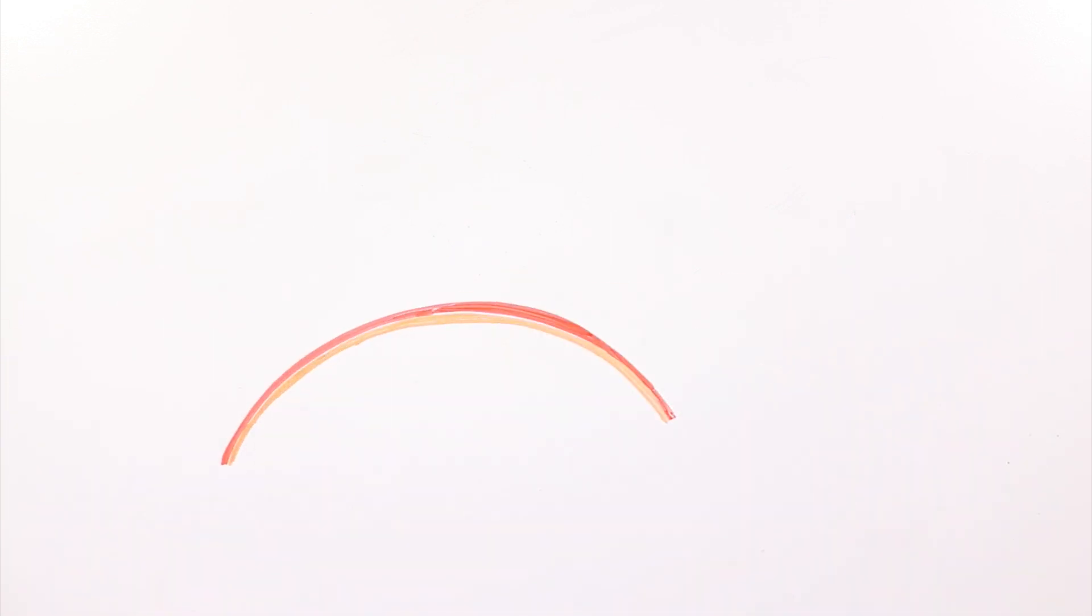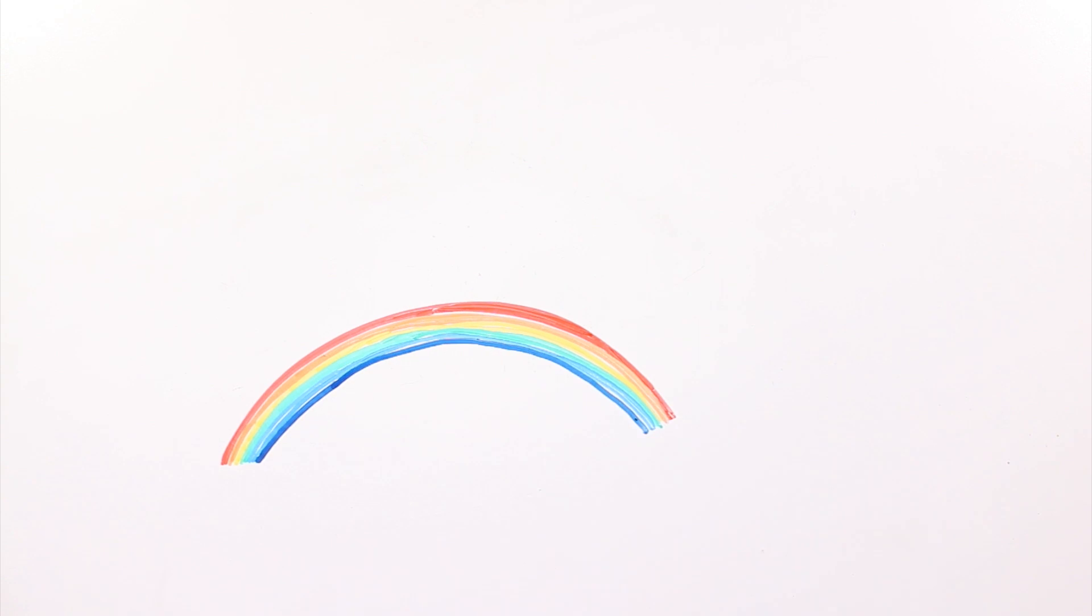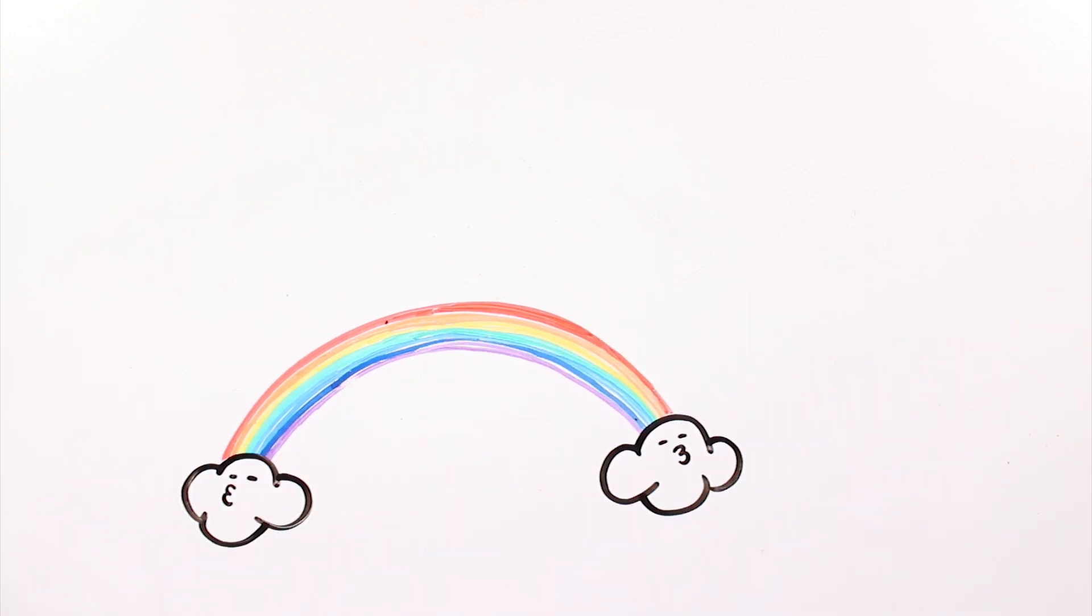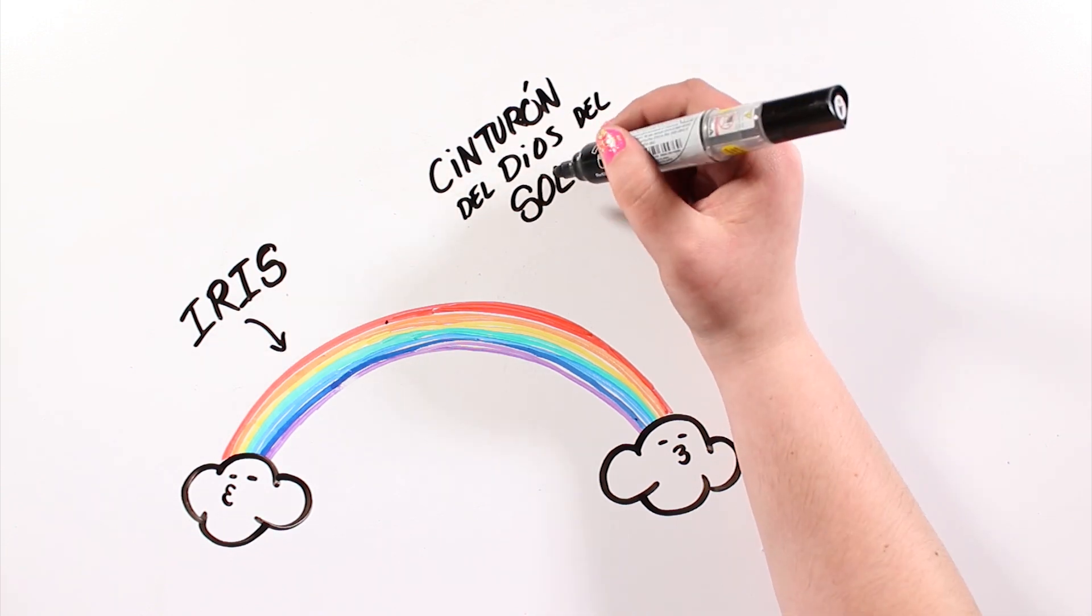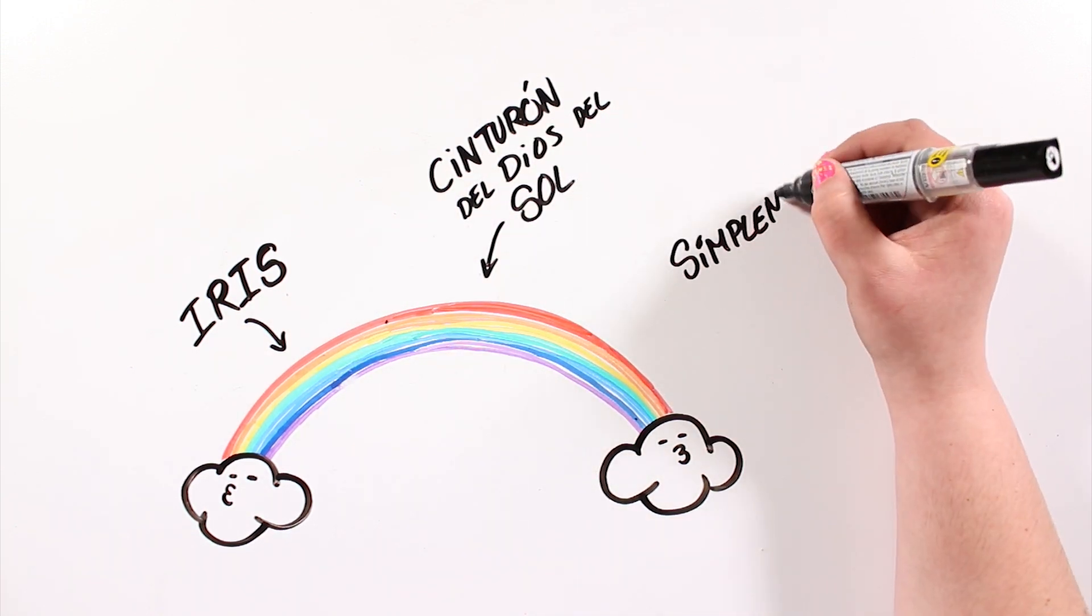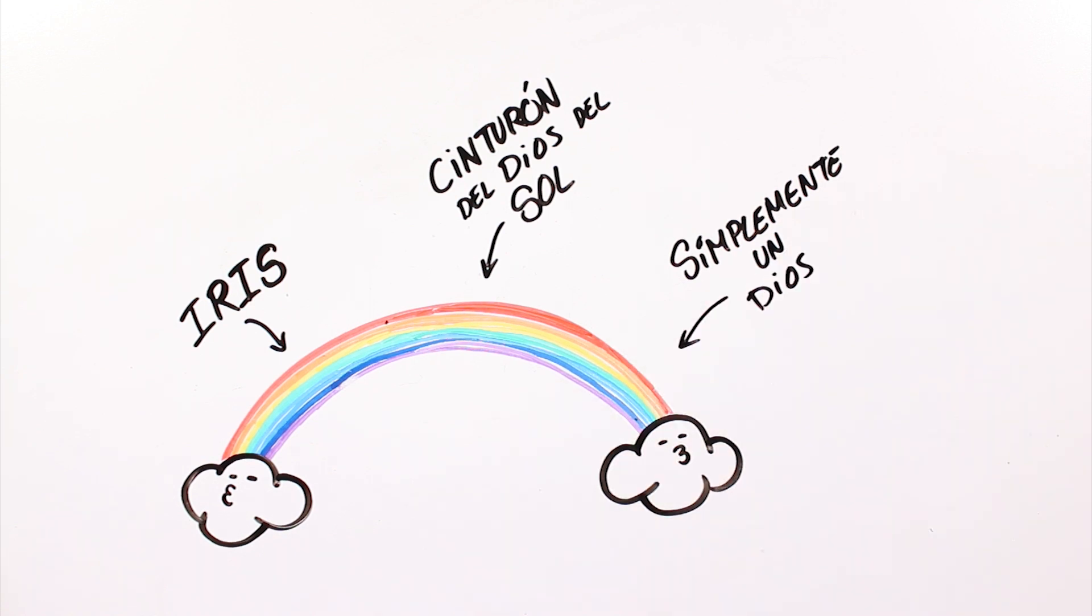In Greek mythology, the rainbow was a messenger goddess between heaven and earth, called Iris. Some other people were convinced the rainbow was the belt of the god of sun, while some cultures thought the rainbow was a god that appeared in heaven.